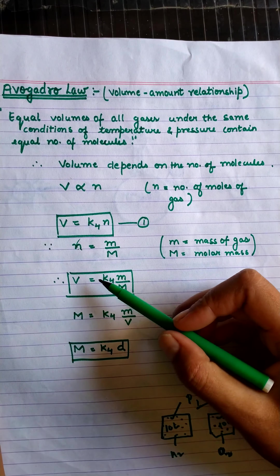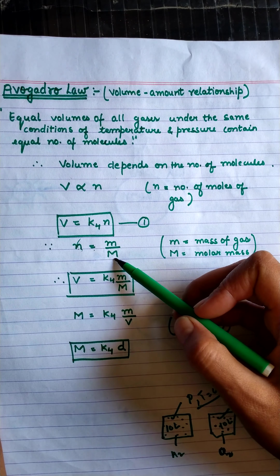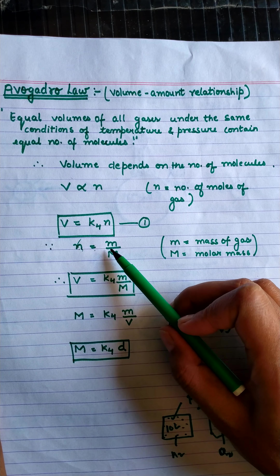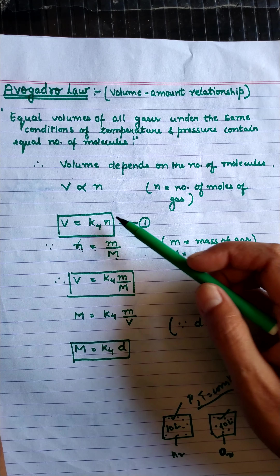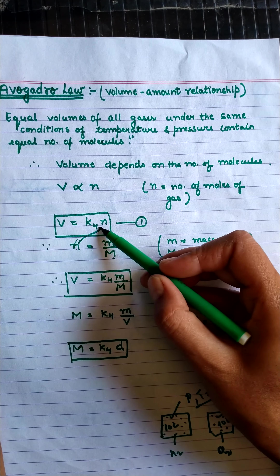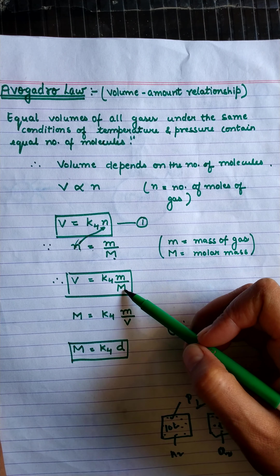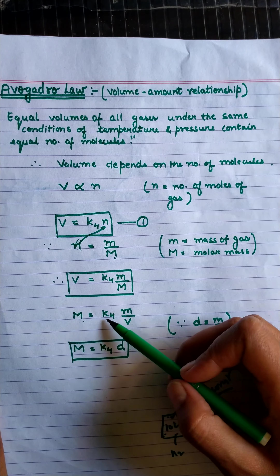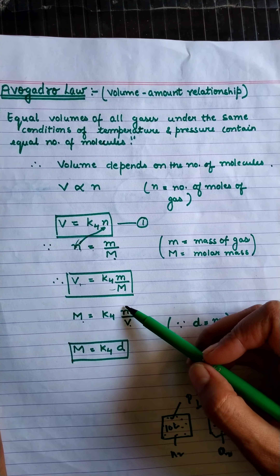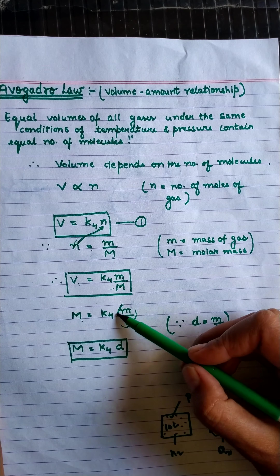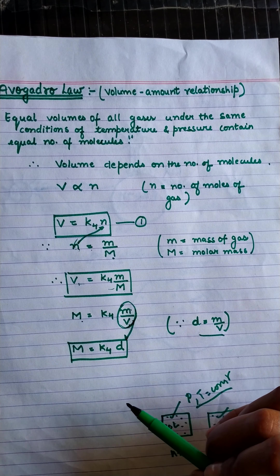If we put the value N = m/M, where m is the mass of the gas and M is the molar mass, we get V = k4·(m/M). Rearranging, M = k4·m/V. Since mass/volume equals density, we can express molar mass in terms of density.